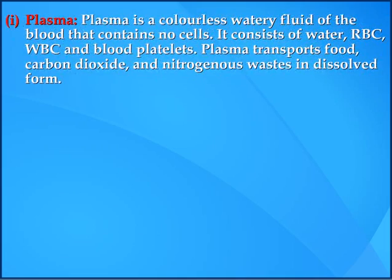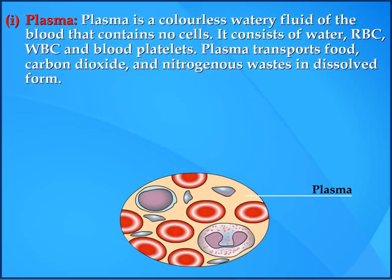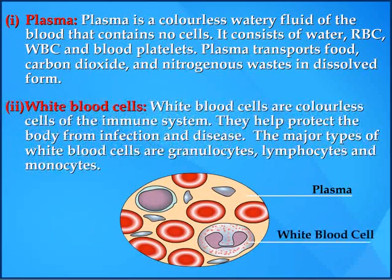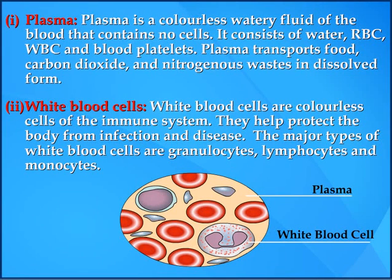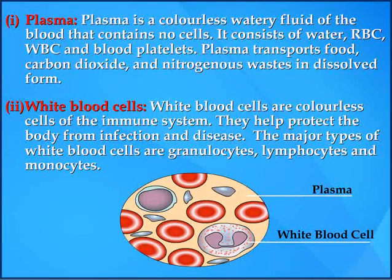1. Plasma. Plasma is a colorless watery fluid of the blood that contains no cells. It consists of water, RBC, WBC, and blood platelets. Plasma transports food, carbon dioxide, and nitrogenous wastes in dissolved form.